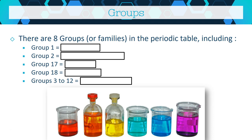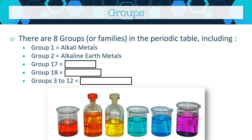There are eight groups or families in the periodic table. The five key ones to know are: group 1, the alkali metals — lithium, sodium, potassium, rubidium, cesium, and francium; group 2, the alkaline earth metals — beryllium, magnesium, calcium, strontium, barium, and radium; and groups 3 through 12, the transition metals — including scandium, titanium, vanadium, chromium, manganese, iron, cobalt, nickel, copper, and zinc, plus elements below them.